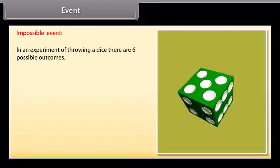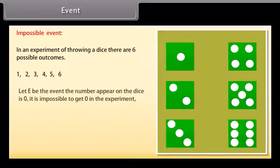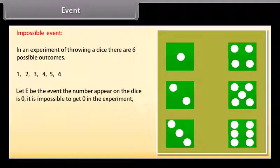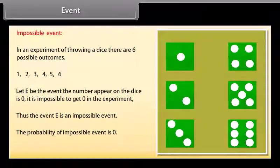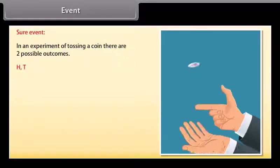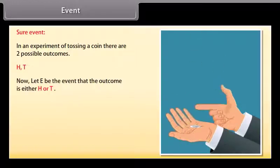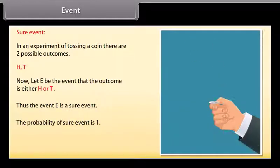Impossible event: In an experiment of throwing a dice, there are 6 possible outcomes: 1, 2, 3, 4, 5, 6. Let E be the event that the number appearing on the dice is 0. It is impossible to get 0 in the experiment. Thus, event E is an impossible event. The probability of an impossible event is 0. Sure event: In an experiment of tossing a coin, there are 2 possible outcomes: H, T. Let E be the event that the outcome is either H or T. Thus, event E is a sure event. The probability of a sure event is 1.